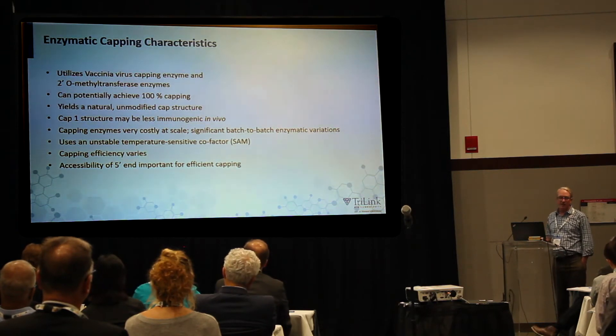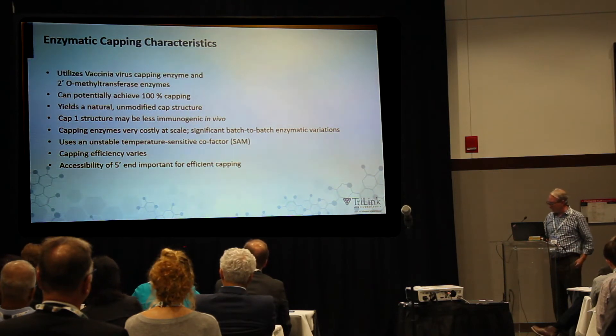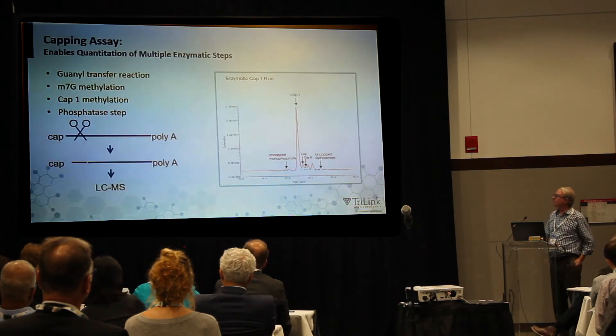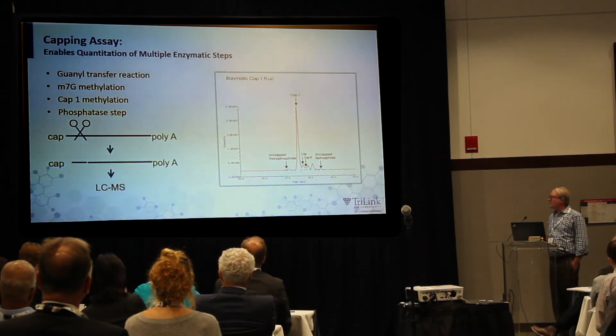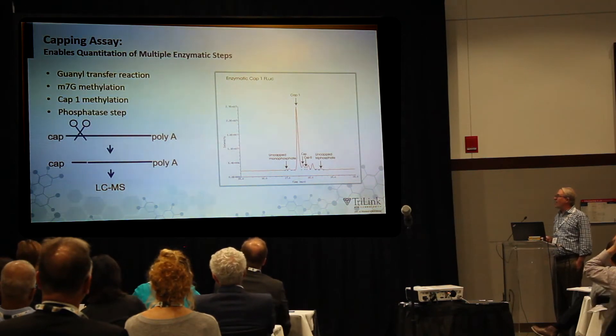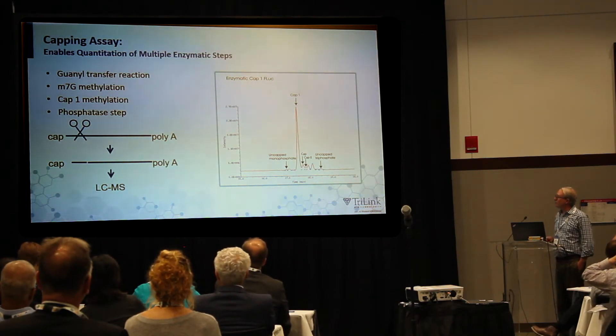This is often the case with replicon RNAs. You can get inefficient capping if you have a very strong structure at the 5-prime end, where you get variability. In order to assess capping, we developed a capping assay. We're trying to assess the capping status of an RNA that may be millions of Daltons in size, and we're trying to distinguish a single methyl group in that sea of millions of Daltons. That's really difficult.